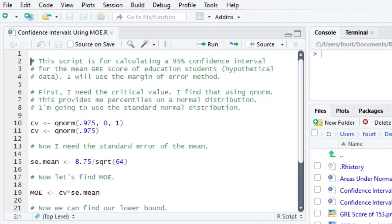First, I need the critical value. I find that using QNORM. QNORM provides percentiles on a normal distribution. We tell QNORM how much area should be beneath the critical value and the mean and standard deviation of the normal distribution. We want 97.5% or .975 (QNORM uses proportions) to be beneath the critical value. Remember there's .025 in the lower and upper tails, so we only want .025 above the percentile in the upper tail. We're using a normal distribution with mean 0 and standard deviation 1, the standard normal distribution.